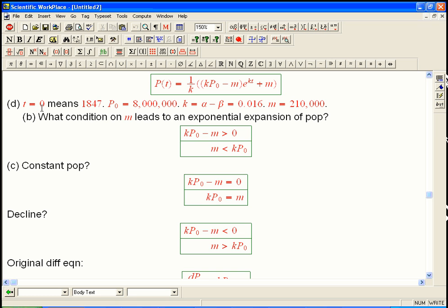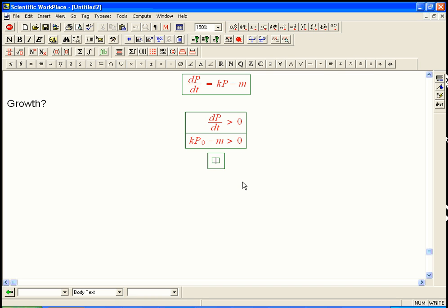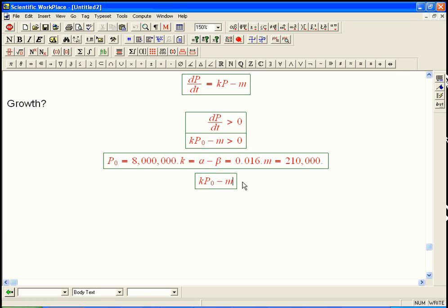So d actually asks you, given these parameters, simply was it expanding or declining right then at 1847 with 8 million people? And so let's just calculate it out. So kP_0, the crucial quantity is kP_0, growth minus emigration, and that's going to be 0.016 times 8 million minus 210,000. And that's negative. Negative 82,000. And so, in fact, the population was declining. It was not enough to – so the natural births were not enough to offset this large number of people who were emigrating. And the population really did decline of Ireland at that time.